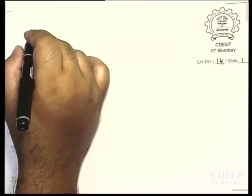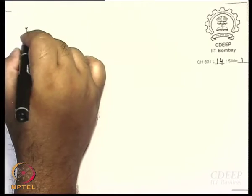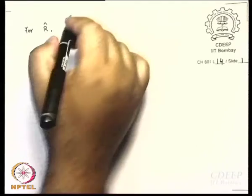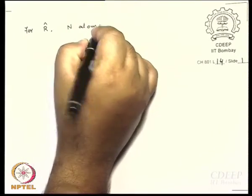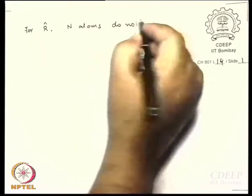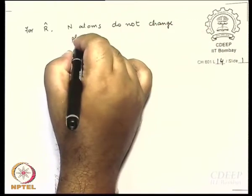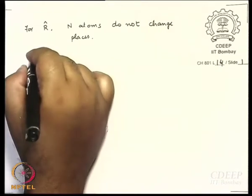How did we, what were we doing? We were dealing with the 3N number of normal modes. For each operation, let's say for an operation R, let's say N number of atoms do not change places. So what is going to be chi R?